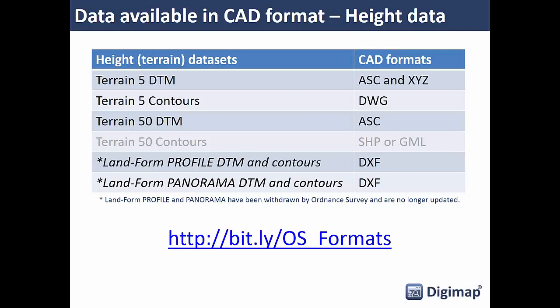Both products come in two versions: a DTM (Digital Terrain Model) which is the ground surface with all buildings and trees stripped off, and a contour dataset. Terrain 5 DTM is the most detailed surface you can get from Ordnance Survey, and it's also provided as a contour dataset available in DWG format. Terrain 50 is less detailed; it comes in a DTM version and a contour version, but we don't publish the Terrain 50 contours as DWG because most CAD work covers small areas where Terrain 5 is the more commonly requested product.